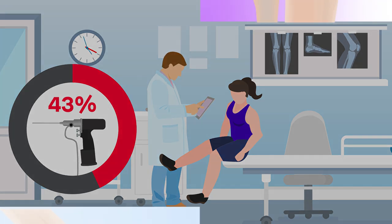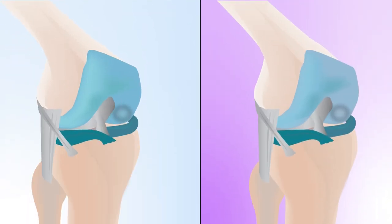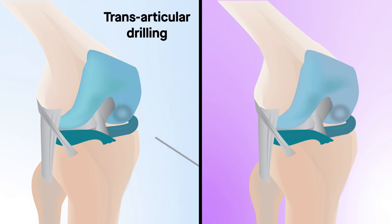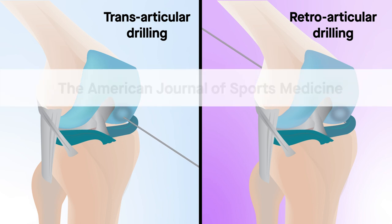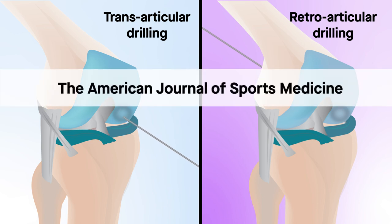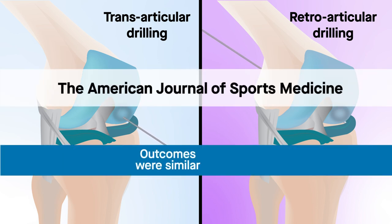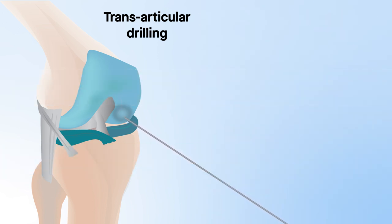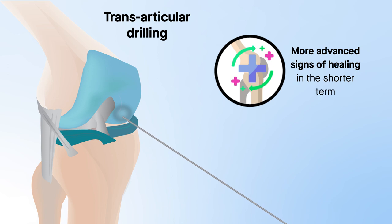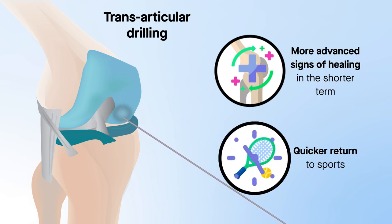A recent study compared the two drilling techniques typically used to treat stable OCD: transarticular drilling and retroarticular drilling. The findings, reported in the American Journal of Sports Medicine, indicate that while outcomes were similar between the two techniques two years after surgery, transarticular drilling produced more advanced signs of healing in the shorter term and allowed for quicker return to sports for patients.